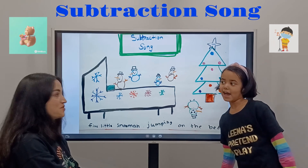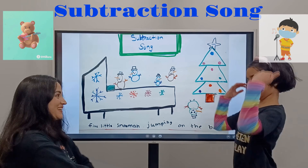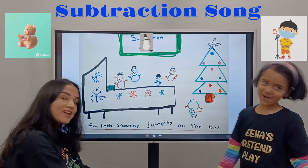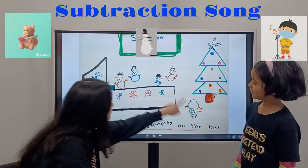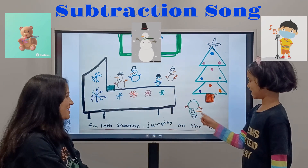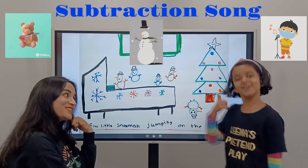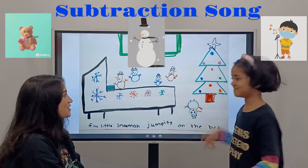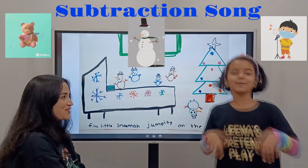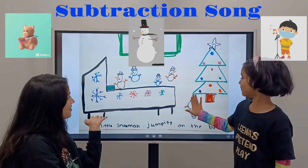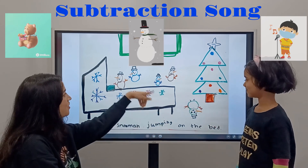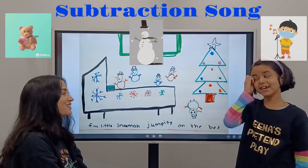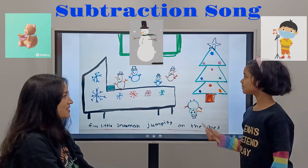So we have a subtraction song. Let's sing it — three, two, one, go. Five little snowmen jumping on the bed, one fell off and bumped his head. Mama called the doctor and the doctor said, no more jumping on the bed. So how many left? Four. Yes, one fell off and then four left. So that is kind of like a subtraction song.